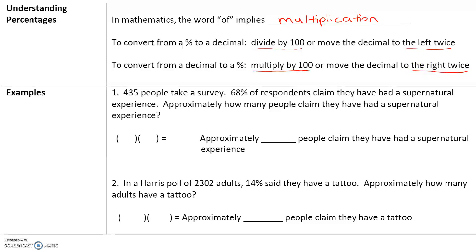Here are some examples. 435 people take a survey. 68% of the respondents claim they have had a supernatural experience. Approximately how many people claim that they have had a supernatural experience? 68% of all the respondents — and we have 435 respondents. The word 'of' implies multiplication.